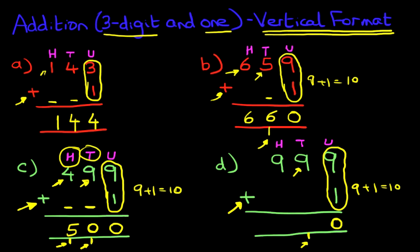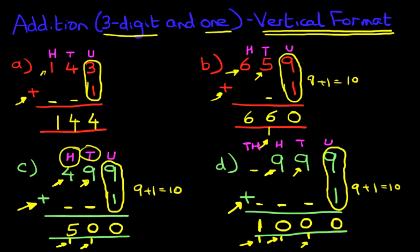Let's add the tens — we've got nine and the one below, that makes ten again. One here and zero here. Now let's add the hundreds: we've got nine here, don't forget the one at the bottom, we're not adding anything else over here. Nine plus one is ten — zero and one again. Now we're introducing a new column: U for units, T for tens, H for hundreds, and the new column is TH — thousands. How many thousands are there? There is one thousand here, so we just add that in. Nine hundred and ninety-nine plus one is one thousand. It's very simple. And that is how we add three-digit numbers and the number one using the vertical format.